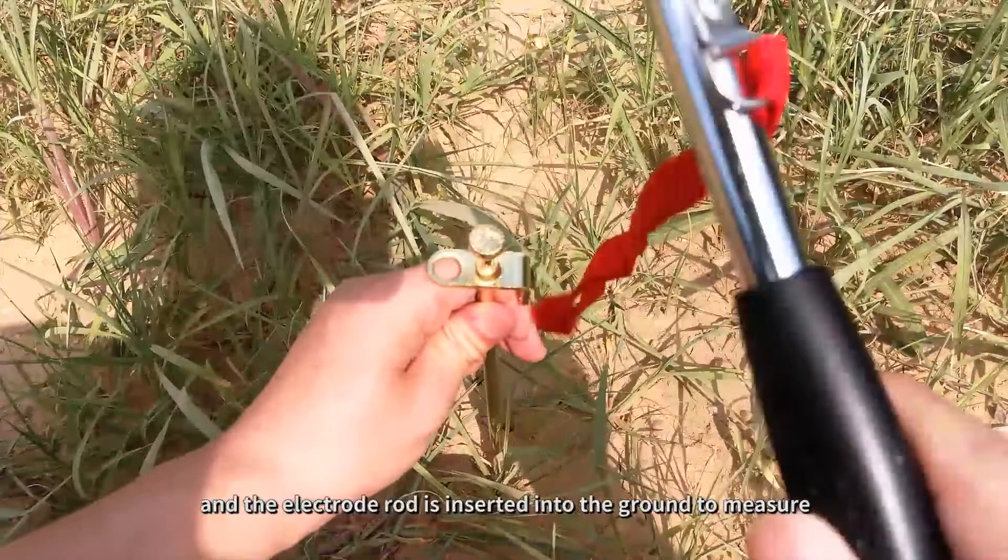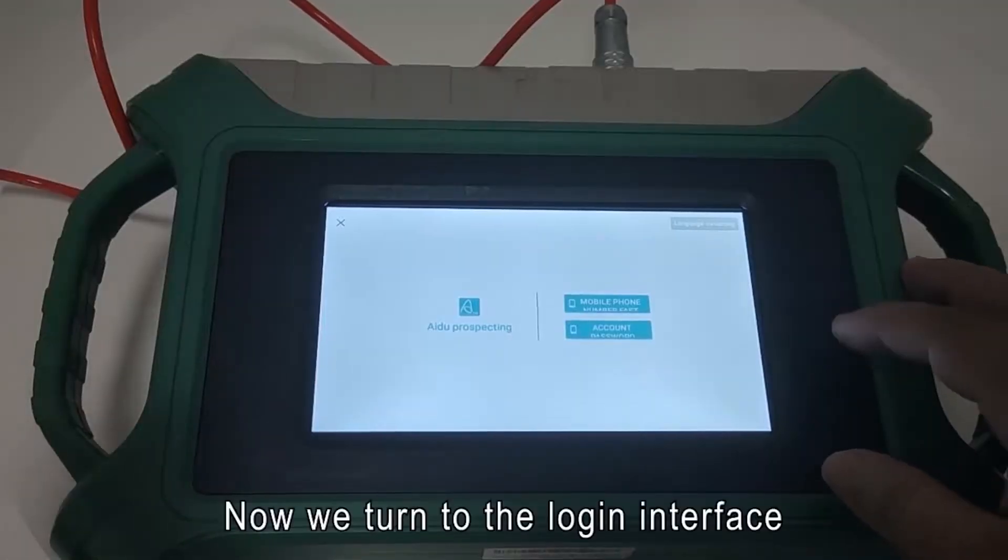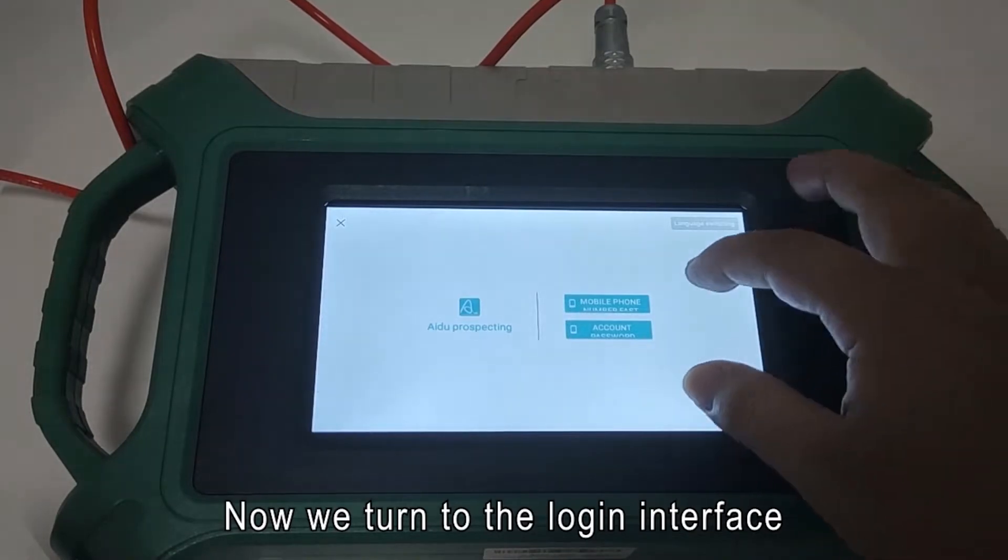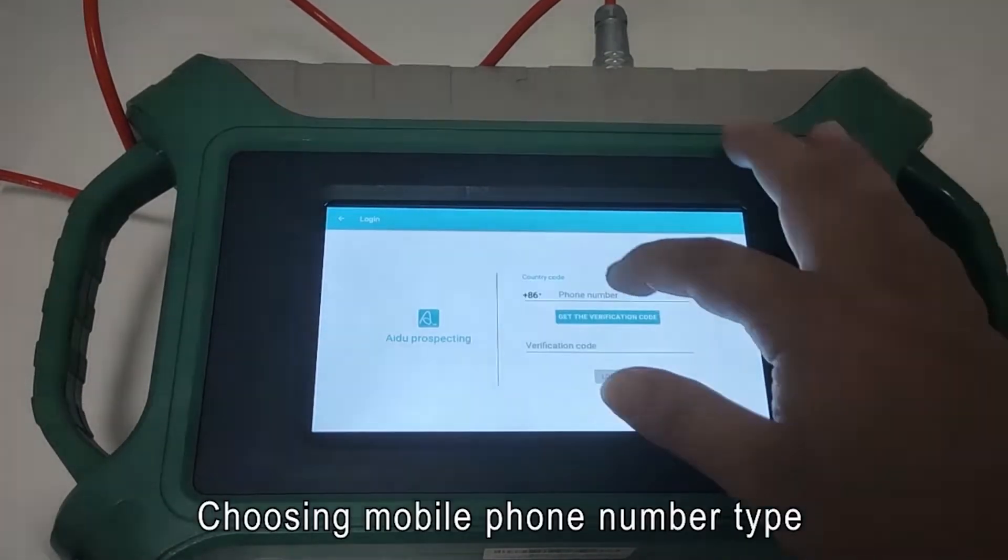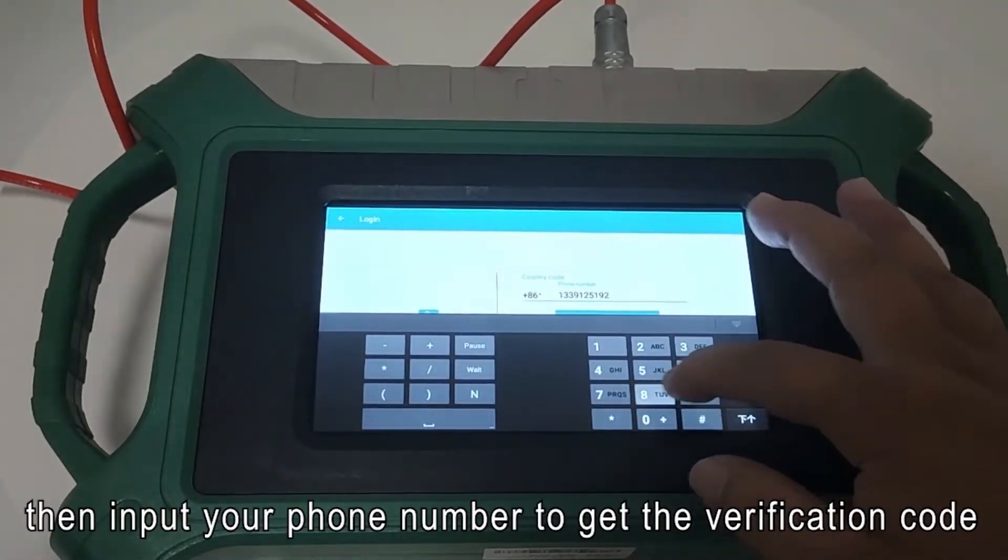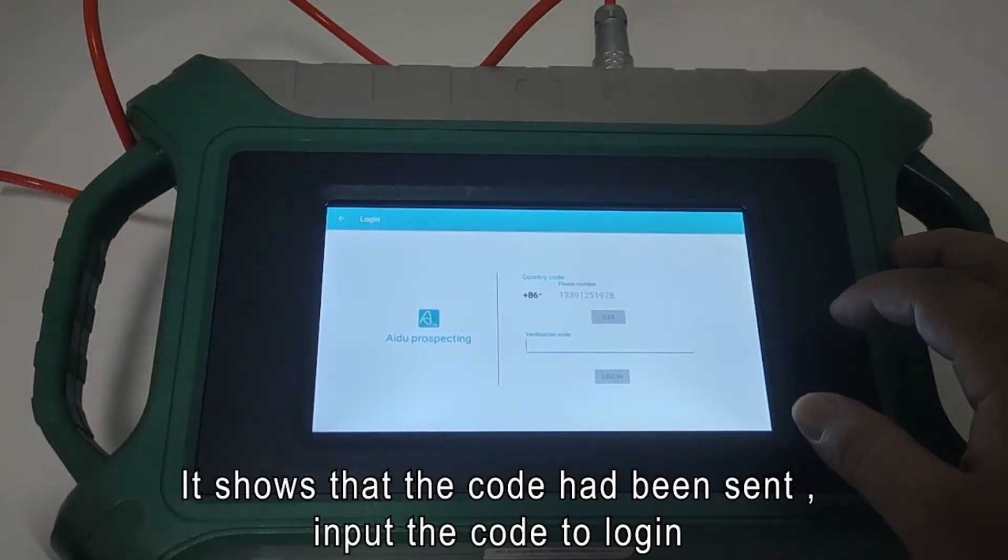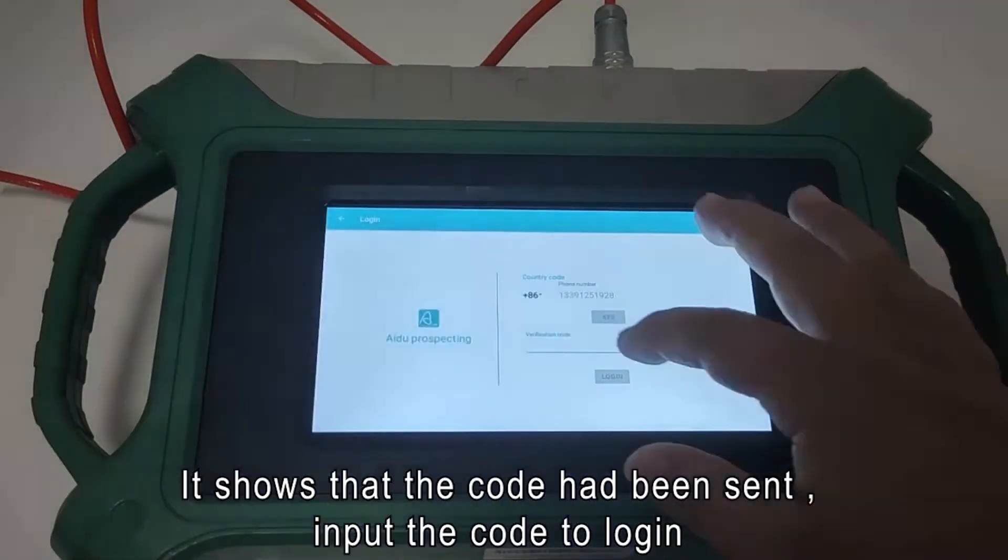The electrode rod is inserted into the ground to measure. Now we turn to the login interface. Choose a mobile phone number type, then input your number to get a verification code. It shows that the code has been sent. Input the code to login.